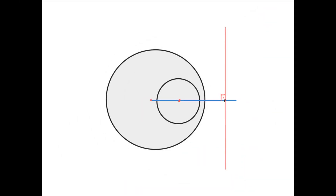Similarly, for internally tangent circles, the point of tangency has power zero with respect to both circles, so the radical axis passes through this point and is perpendicular to the line through the two centers. When one circle is contained entirely inside the other, the radical axis exists but lies outside both circles, still perpendicular to the line connecting the two centers.